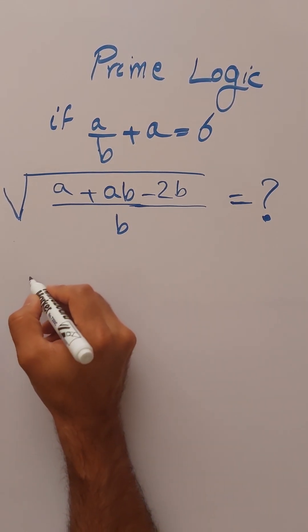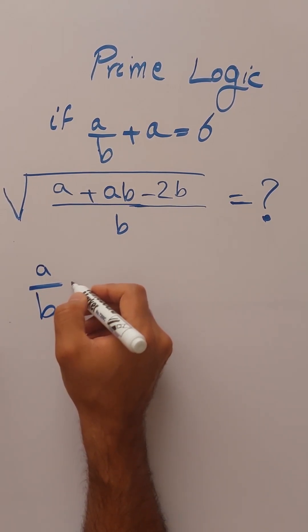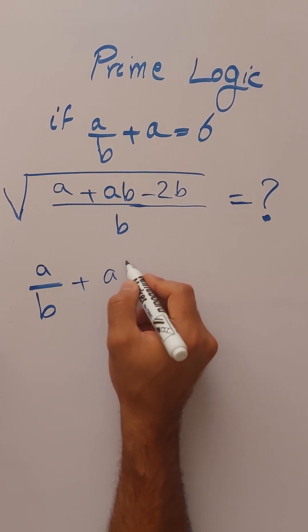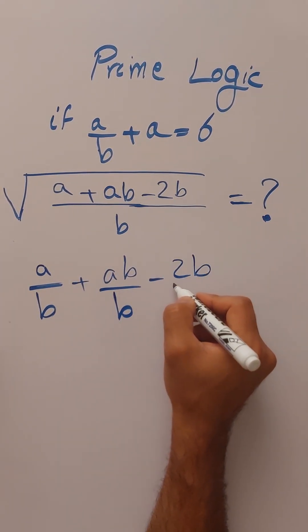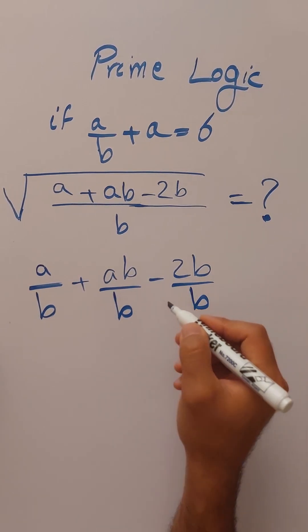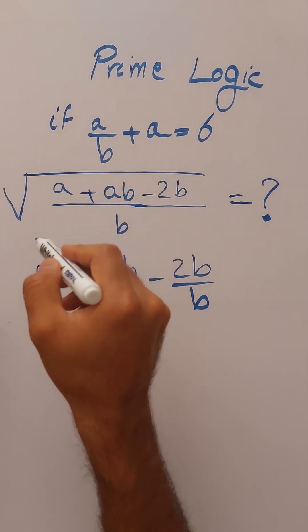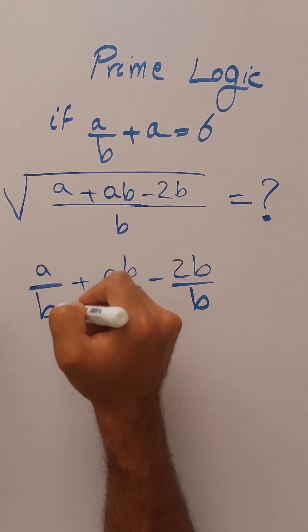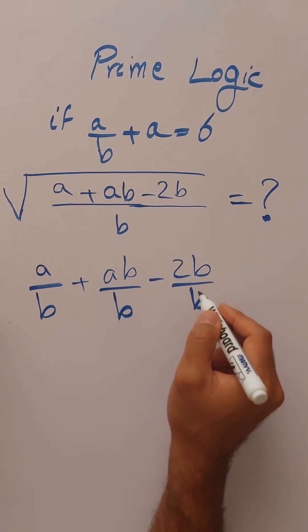So for this purpose, let's break it down individually. So every single term over the denominator here. So A over B plus AB over B minus 2B over B. This is a property of fractions. We can just write down everything on the numerator here over the denominator. So A over B plus AB over B minus 2B over B.